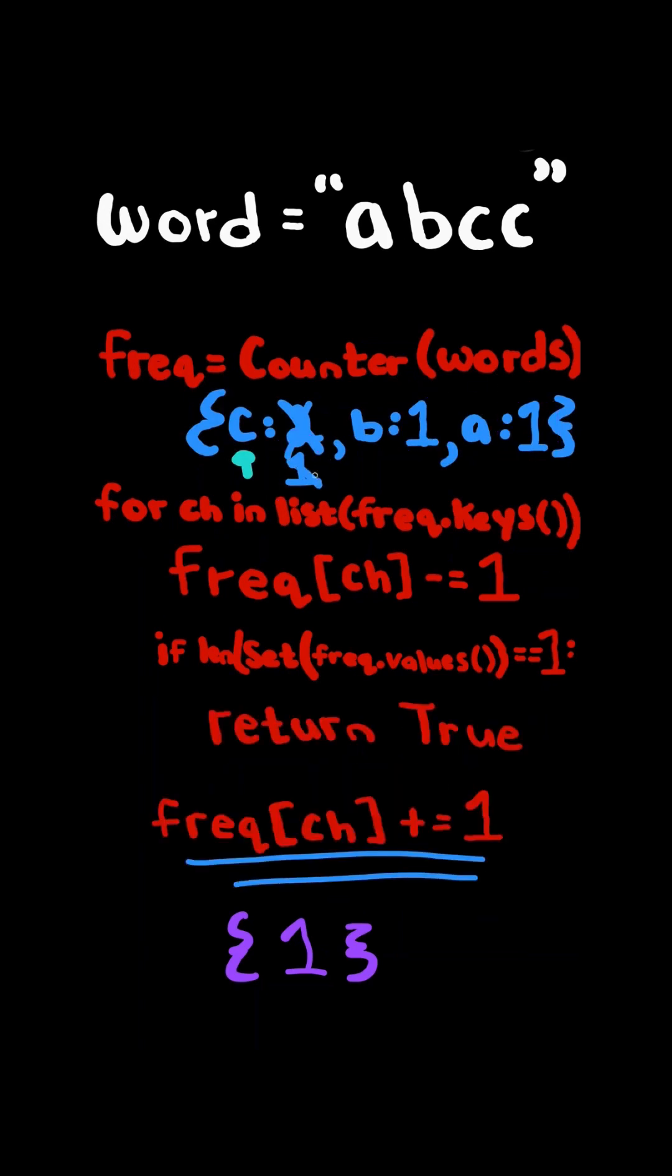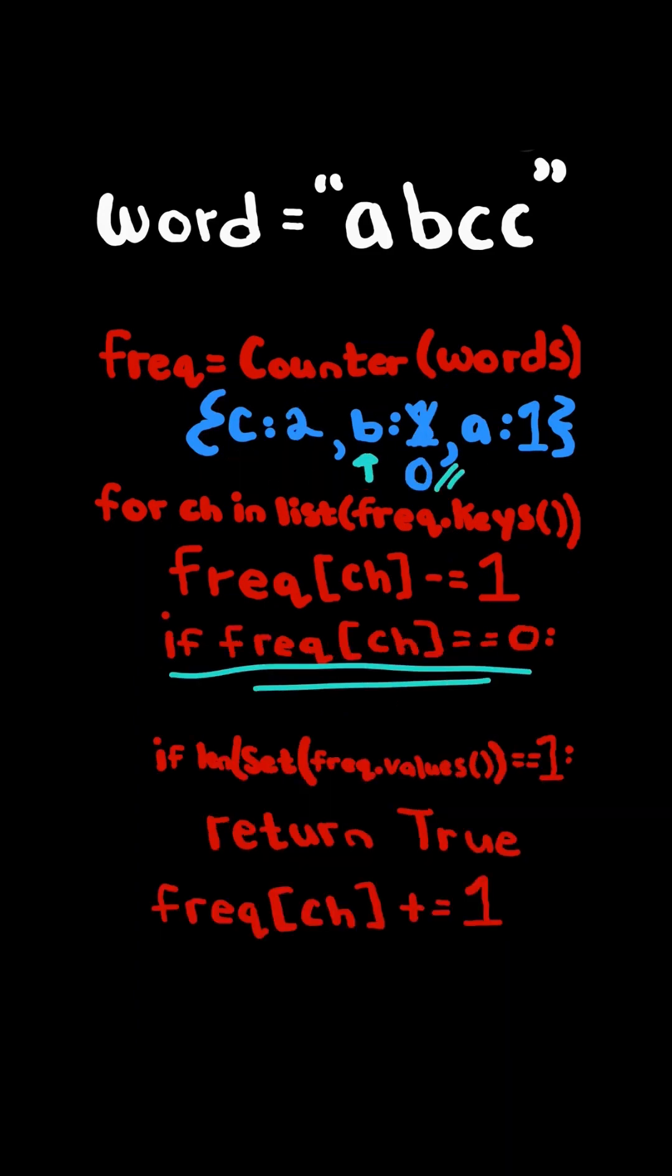If it wasn't the same, then we add back the frequency and continue to the next character. A slight edge case occurs when the frequency hits zero, in which case we delete the item entirely from the dictionary.